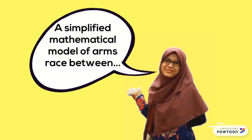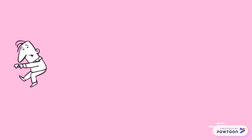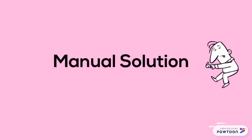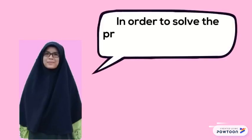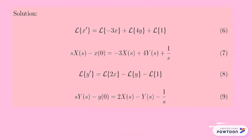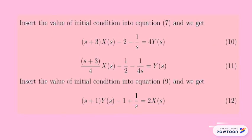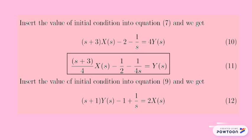A simplified mathematical model for an arms race between country X and country Y is given by an initial value problem. In order to solve the problem, we use Laplace transform. First of all, we need to take the Laplace transform of both sides of all the ordinary differential equations and we get equations 7 and 9. Then, we substitute the values of the initial conditions into equations 7 and 9 to get equations 11 and 12.